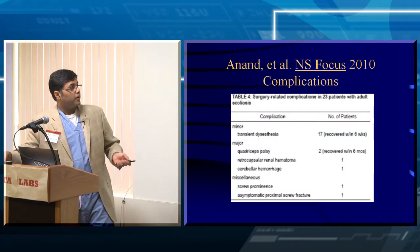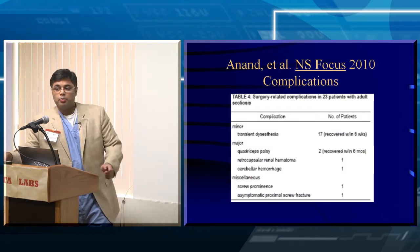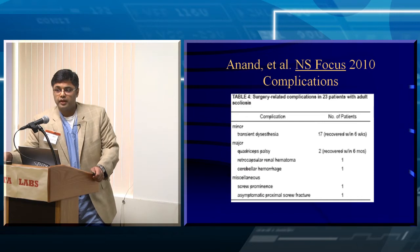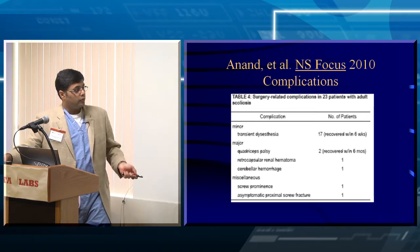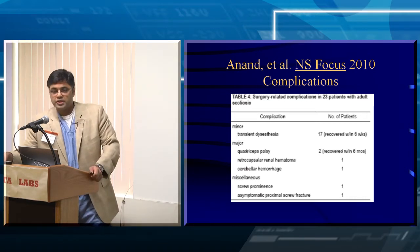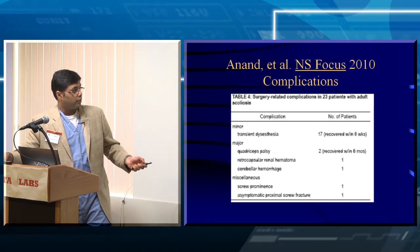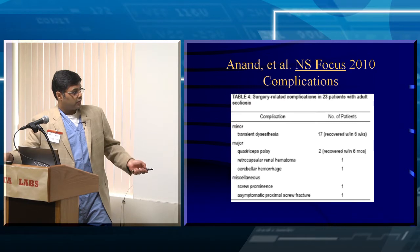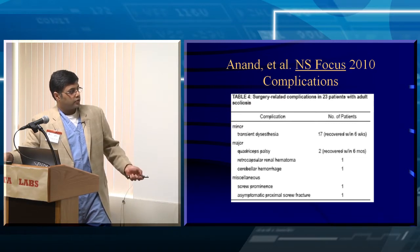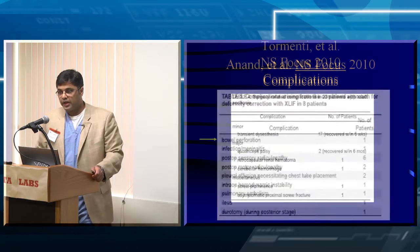Around 2010, a number of publications on this topic appeared in Neurosurgery Focus. Neil Anand had one, and looking at his article, the problems included dysesthesias from the lateral approach, quadriceps palsy from the lateral approach, a hematoma near the kidney from moving the kidney, one remote brain hemorrhage, screw prominence, and screw fractures — a number of issues with doing these cases MIS.